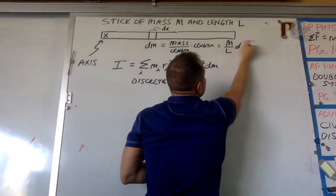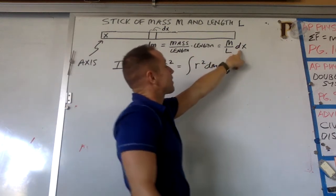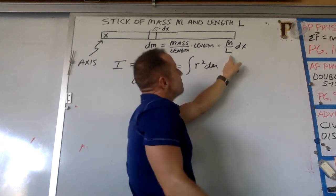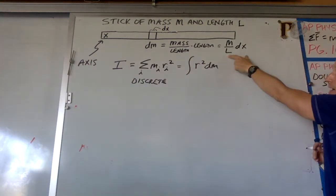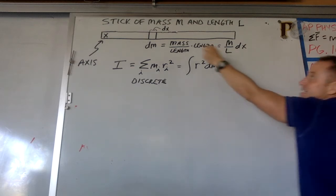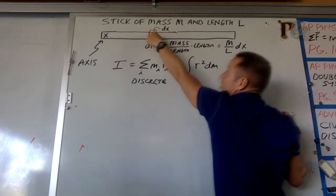So it's going to be mass per length times length or M over L dx. So the meaning of this combination here, M over L dx, that is how much one little chunk weighs.